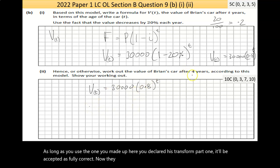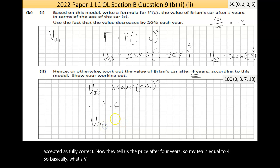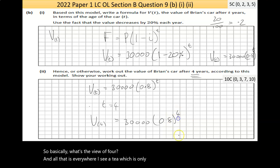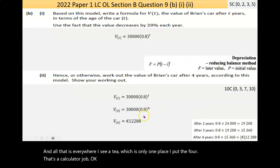They tell us the price after four years. So my T is equal to four. So basically, what's V of four? And all that is, is everywhere I see T, which is only one place, I put the four. That's a calculator job. I put it to the calculator, and I came up with 12,288.